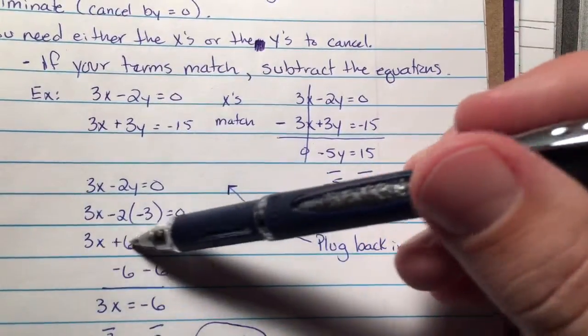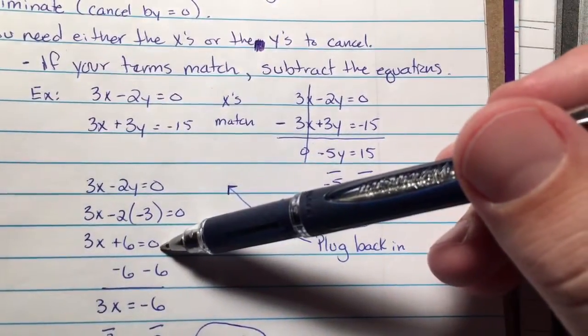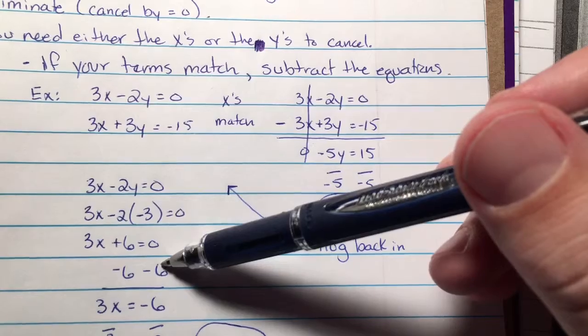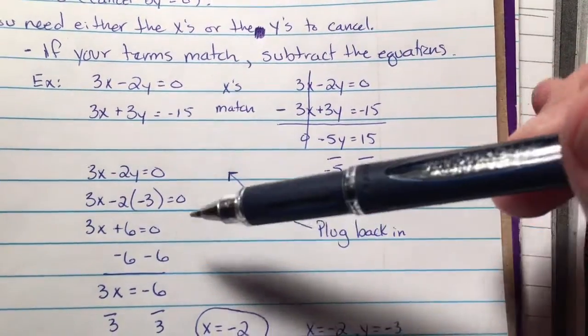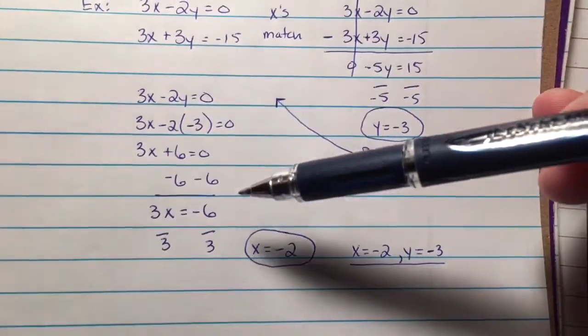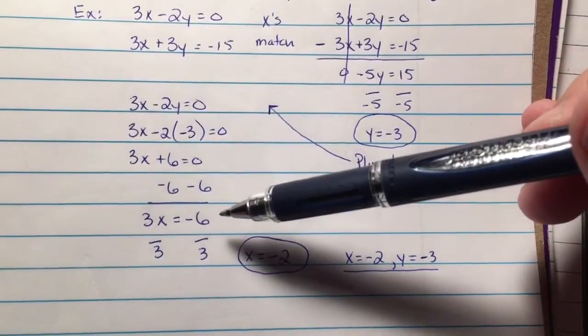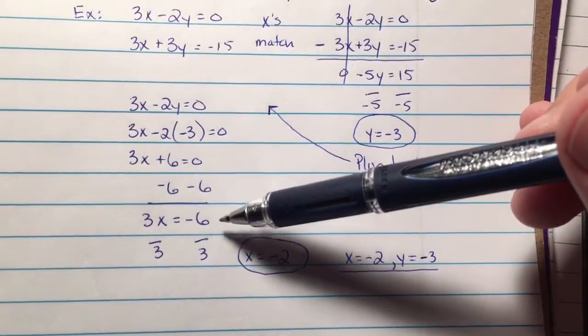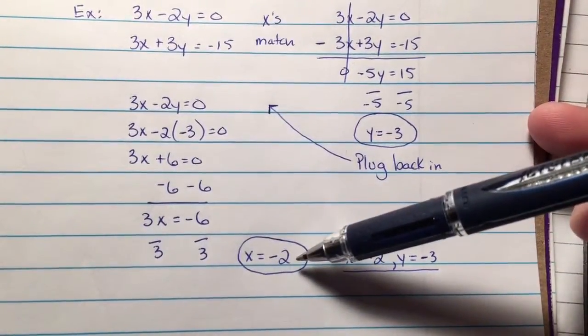And then I have a two-step equation right here, where I subtract the 6, and I get this new equation, the one-stepper. Divide by 3 and x equals negative 2.